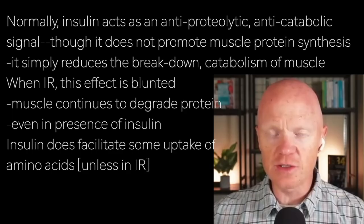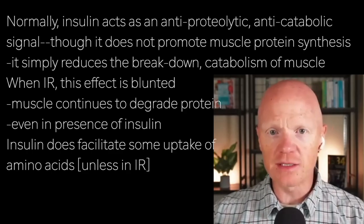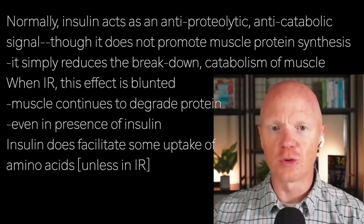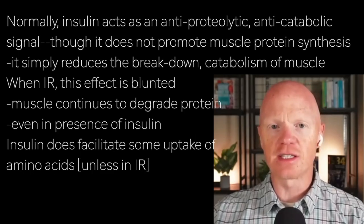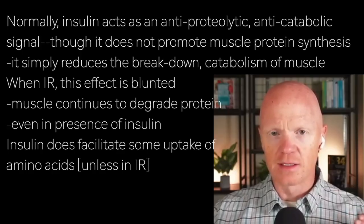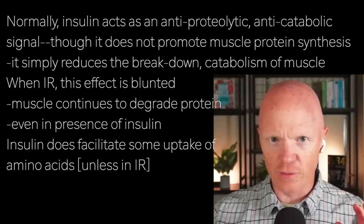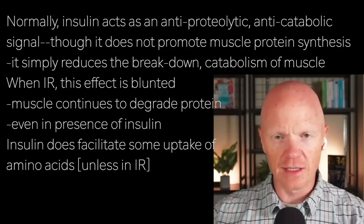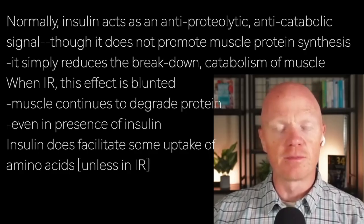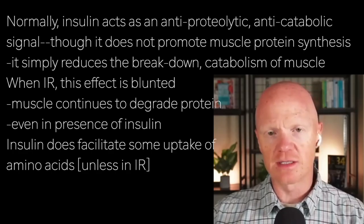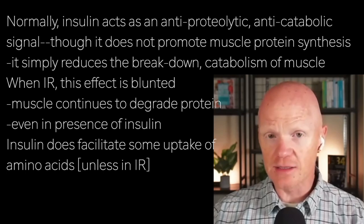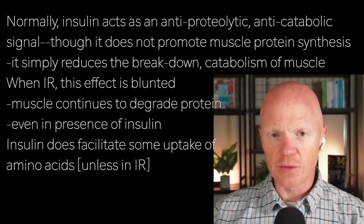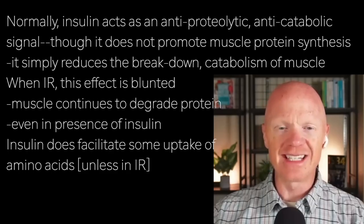In insulin-resistant individuals, the suppression of catabolism is blunted, so the muscle continues to degrade protein even in the presence of insulin, when insulin would be attempting to signal the muscle to hold on to it. Insulin does facilitate some uptake of amino acids — it helps the muscle pull in amino acids, although it's not necessary for it. So when insulin signaling is impaired, amino acid uptake can be compromised, which can mitigate some degree of muscle protein synthesis. This makes clear that if insulin isn't working well, you have a double hit: some degree of compromised synthesis and absolutely compromised inhibition of muscle breakdown.